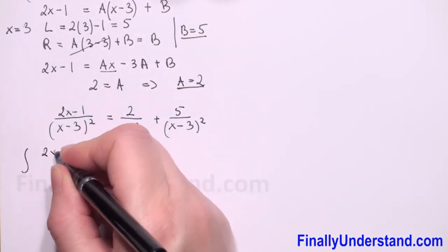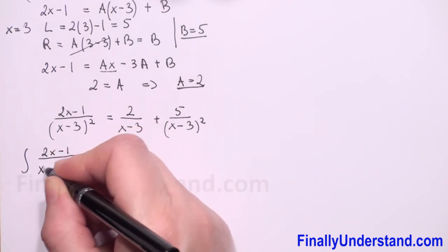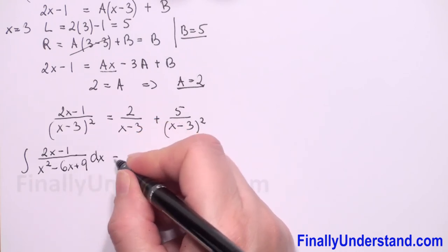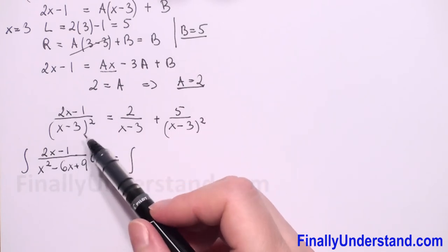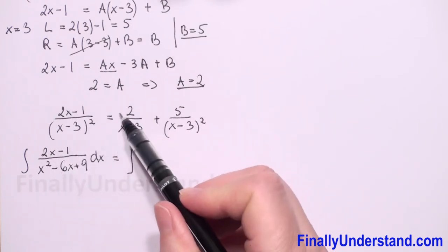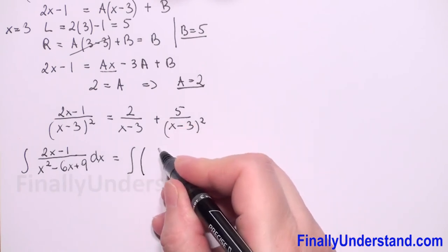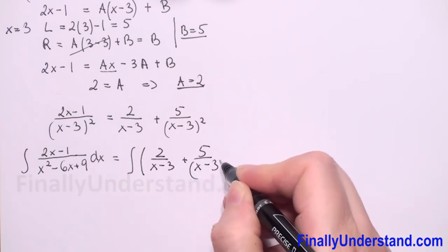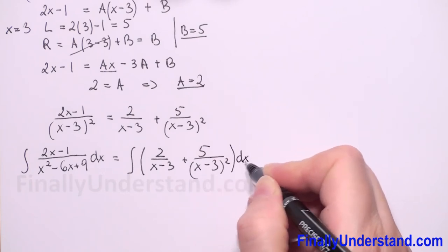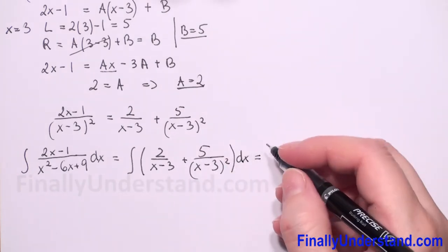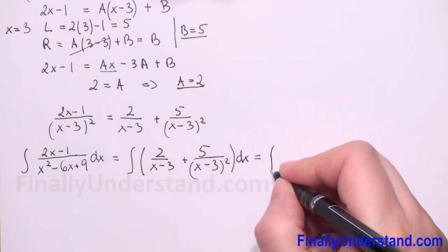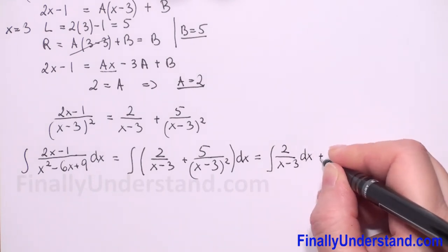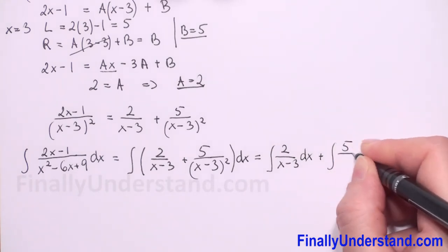Now we come back to our integral: the integral of (2x minus 1) over (x squared minus 6x plus 9) with respect to x. We substitute our rational fraction with the sum of partial fractions: integral of 2 over (x minus 3) plus 5 over (x minus 3) squared, with respect to x. The integral of a sum equals the sum of integrals, so we have: integral of 2 over (x minus 3) dx plus integral of 5 over (x minus 3) squared dx.